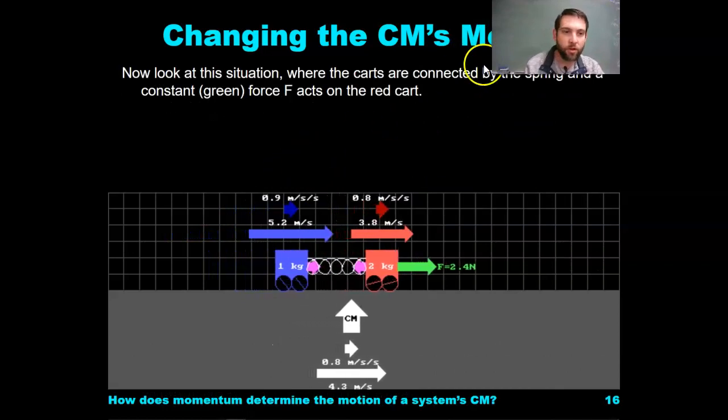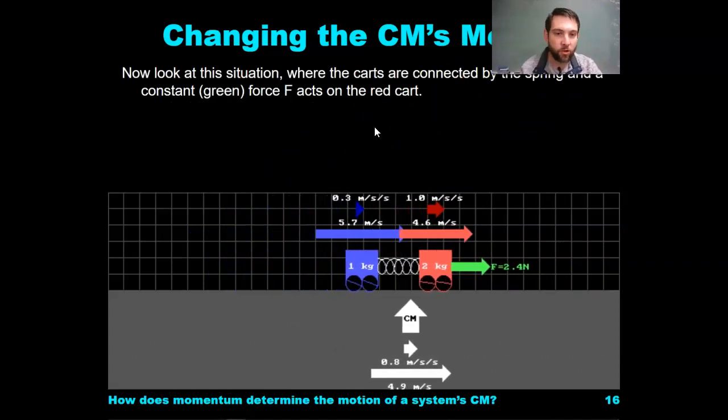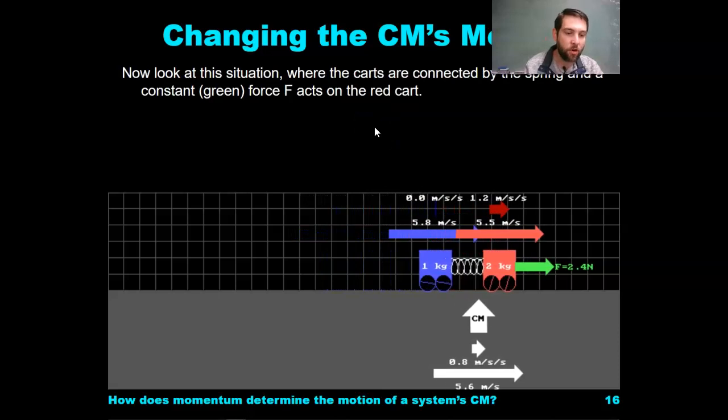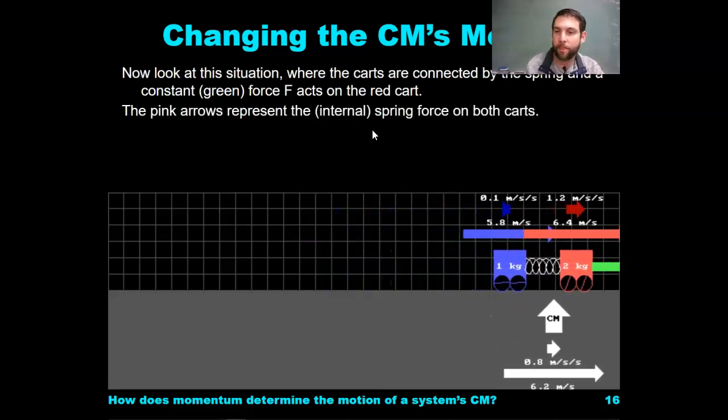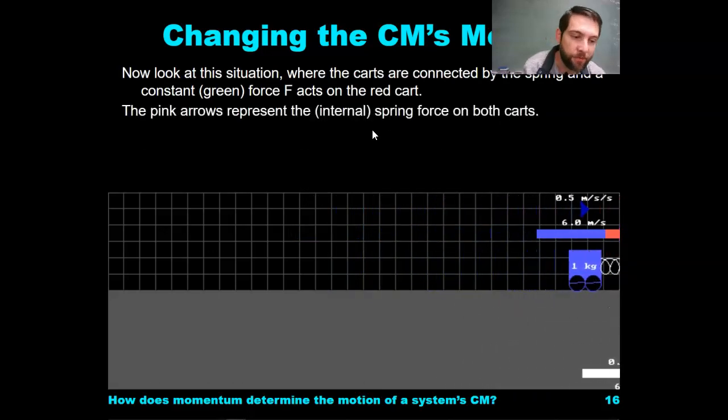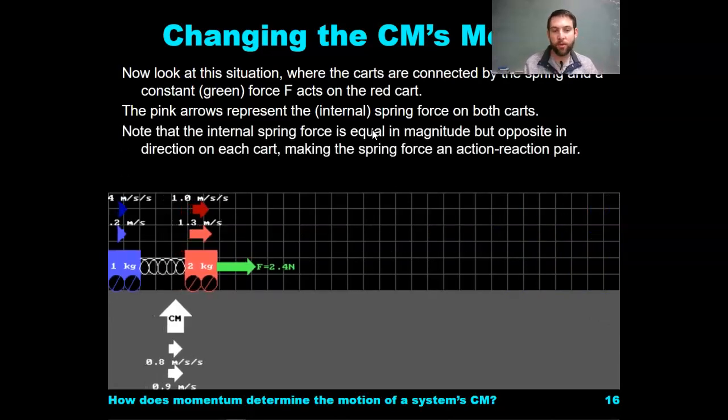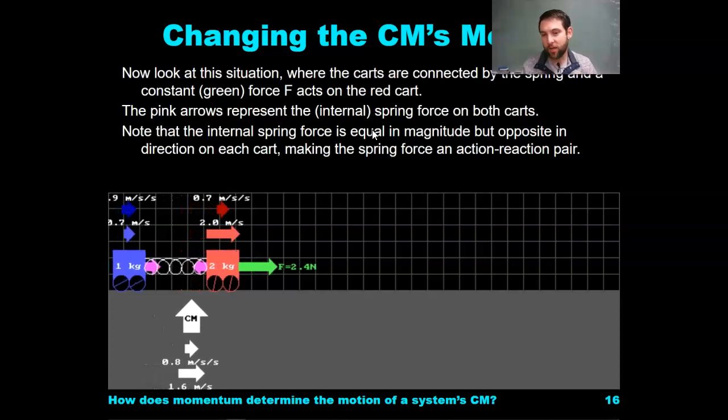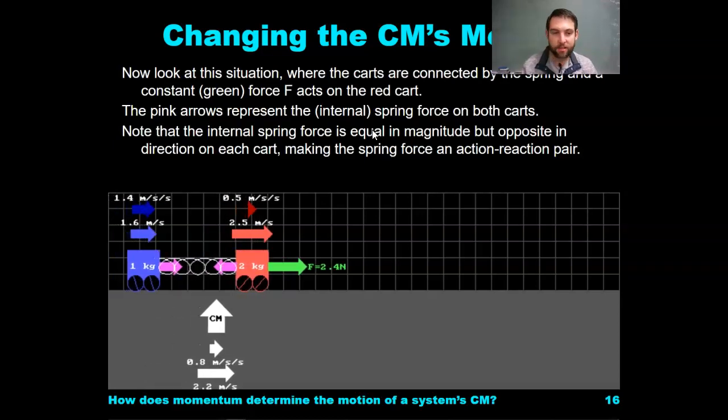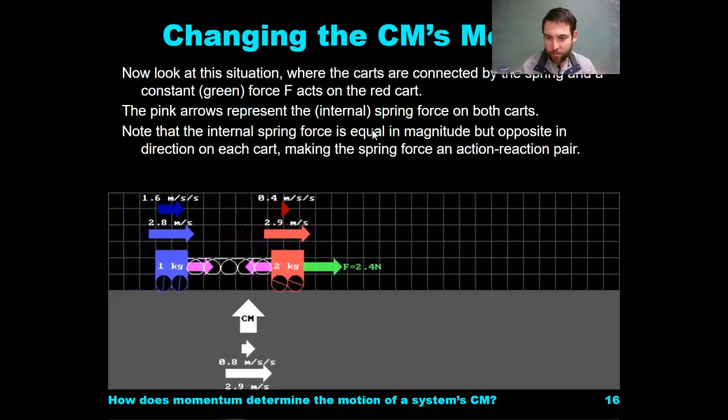Look at this situation where the carts are connected by a spring and a constant green force acts on the red cart, so maybe a tension force or something. Pink arrow represents the internal spring force on both carts. Note that the internal spring force is equal in magnitude but opposite in direction on each cart, making the spring force an action-reaction pair.